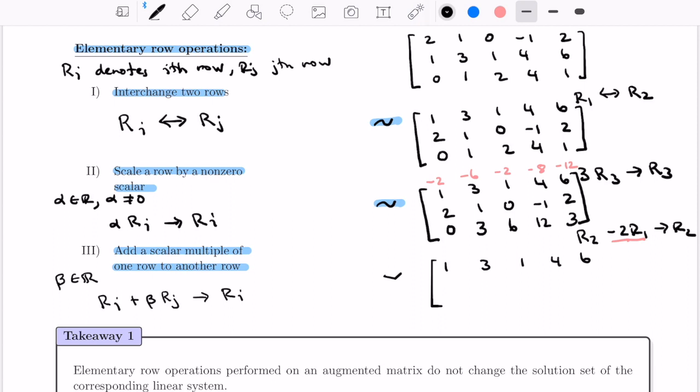The second row, I'm going to take 2 and add to it minus 2, which gives me 0. I'll take 1 and add minus 6, giving minus 5. I'll take 0 and add minus 2, giving minus 2. I'll take minus 1 and minus 8, giving 9. 2 and minus 12 give me minus 10. The third row stays the same: 0, 3, 6, 12, and 3. Again, I put a tilde to indicate we've done an elementary row operation.